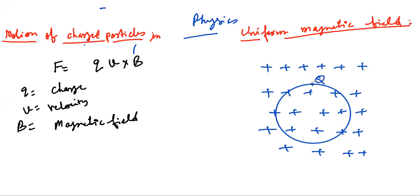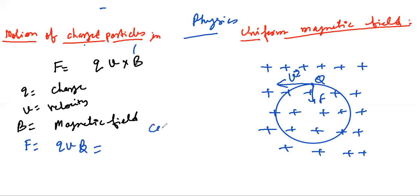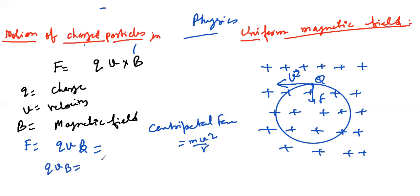Charge Q will be here, and this is the direction of velocity. Force will be toward the center. F is equal to QVB. Have you studied about centripetal force? The centripetal force value will be MV² divided by R. So these two will be equal: QVB = MV²/R.